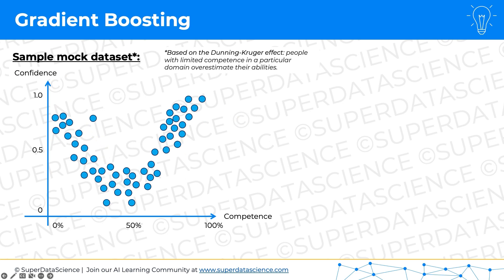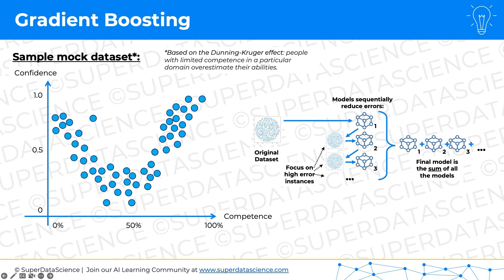So now let's see how we can model it with gradient boosting. As we discussed, gradient boosting works in the following way: there's the original data set, then we create the first model, then we look at the residuals or errors, then we model that, then we look at the residuals again, and so on. The final ensemble model is the sum of all those models. Let's proceed to that.